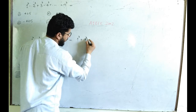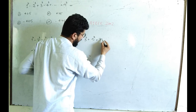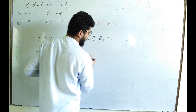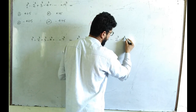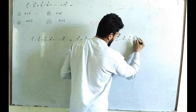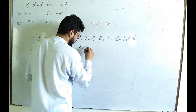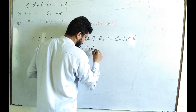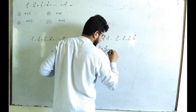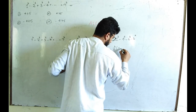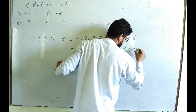I can rewrite it by grouping: 1 cube plus 3 cube plus 5 cube plus 7 cube plus 9 cube — those are the odd terms — and then minus 2 cube minus 4 cube minus 6 cube minus 8 cube. Then I can further factor by taking 2 cube out of the even terms, leaving 1 cube plus 2 cube plus 3 cube plus 4 cube inside.